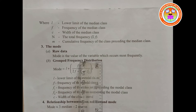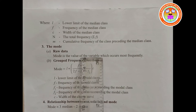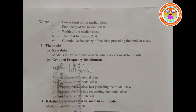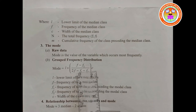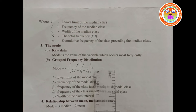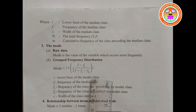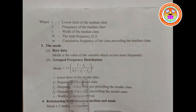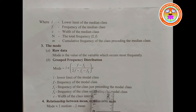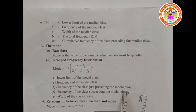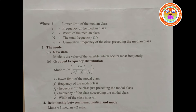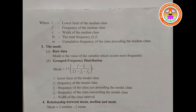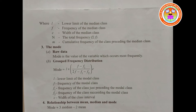Then for mode: raw data — mode is the value of the variable which occurs most frequently. Grouped frequency distribution formula: Mode = L + [(f − f1) / (2f − f1 − f2)] × c, where L is the lower limit of the modal class, f is the frequency of the modal class, f1 is the frequency of the class just preceding the modal class, f2 is the frequency of the class succeeding the modal class, and c is the width of the class interval. Relationship: Mode = 3 × Median − 2 × Mean.